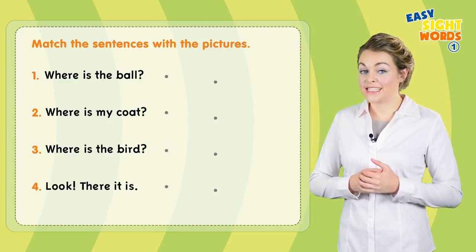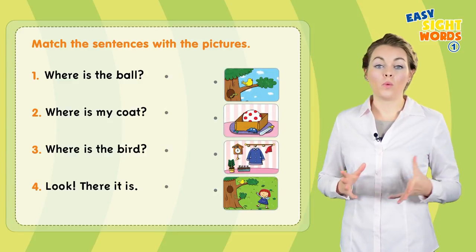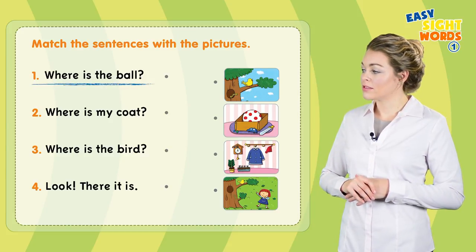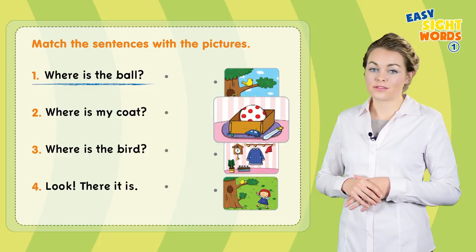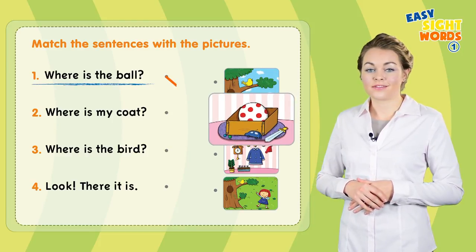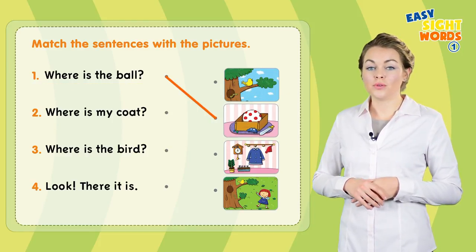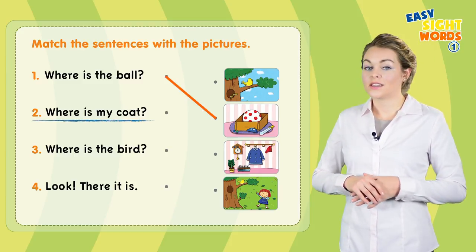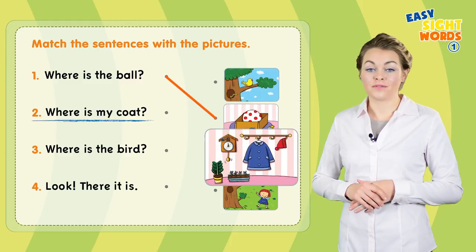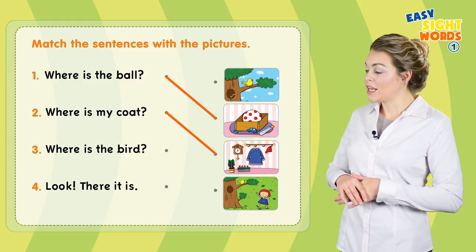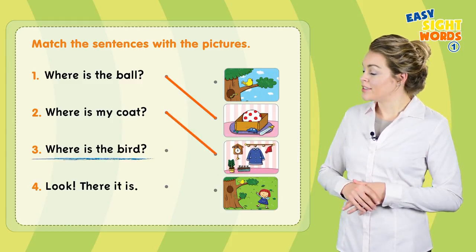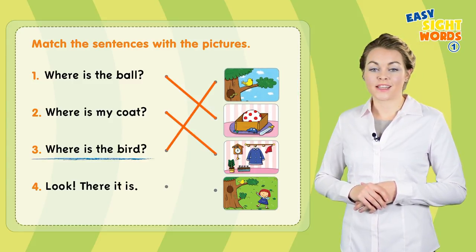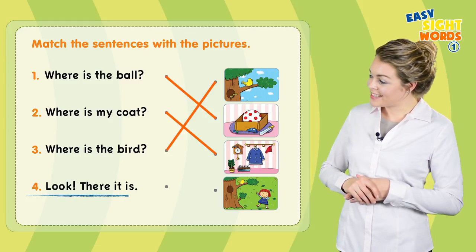Now match the sentence to the pictures. Number one: where is the ball? Draw the line to the matching picture. Number two: where is my coat? That's right, that's the picture. Number three: where is the bird? Four: look, there it is.